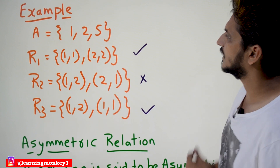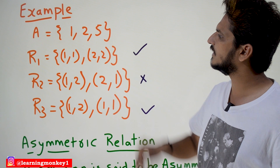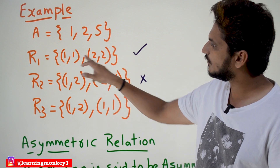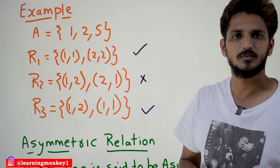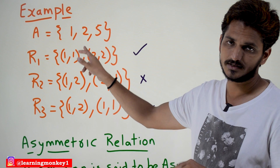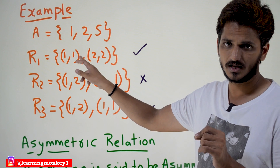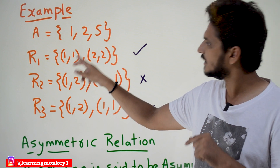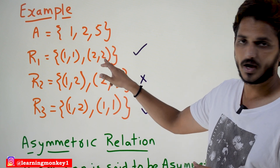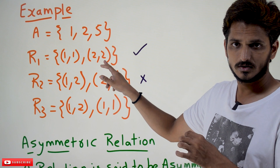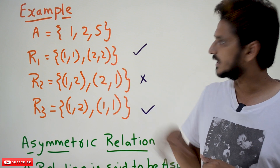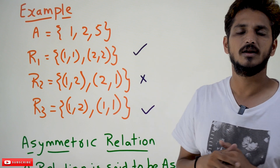Now check the examples. Take the set {1, 2, 5}. We have relation R1 = {(1,1), (2,2)}. Is it an anti-symmetric relation? x relates y and y relates x — if that happens, then x must equal y. Yes: 1 equals 1. Similarly, (2,2): x relates y and y relates x, then x equals y — 2 equals 2, both are the same. That is why this is an anti-symmetric relation.